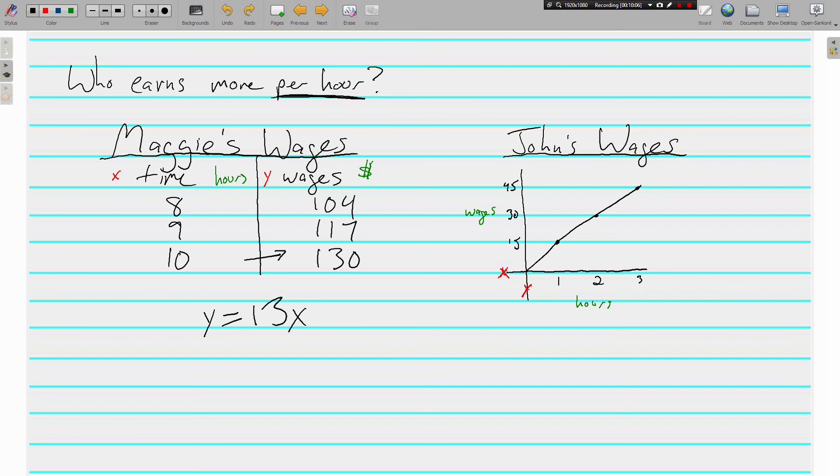And John's wages, what do you do to x to get y? What do you do to 1 to get 15? What do you do to 2 to get 30? What do you do to 3 to get 45? You multiply by 15. So here, y equals 15x. So who earns more per hour? John does. John earns $15 per hour. Maggie only earns $13 per hour. Even though it's showing bigger money here for Maggie, $104, $117, $130, it's also showing us that she's working more hours. Here, we're only seeing John working 1, 2, and 3 hours, so it's less money, but he is earning more per hour. If John and Maggie both worked the same amount of time, John would get more money.